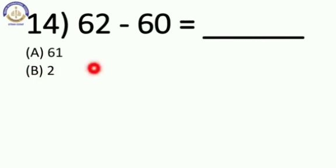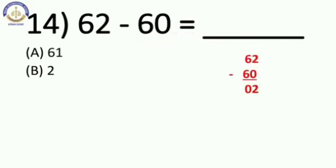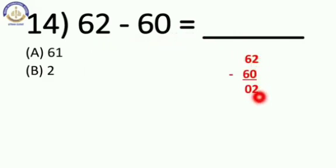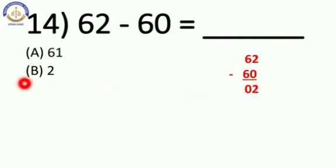Now next: 62 minus 60 is equal to blank. 2 minus 0 is equal to 2, and 6 minus 6 is equal to 0. Our answer is 2. Option number B.